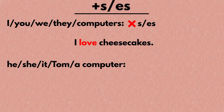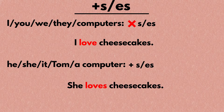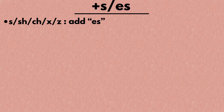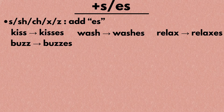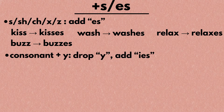On the other hand, if your subject is he, she, it, Tom, or anything singular like 'a computer,' you add an -s after the verb, as in 'she loves cheesecakes.' When adding -s, you need to do it slightly differently depending on the pronunciation of the verb. If the verb ends with s, sh, ch, x, or z, add -es. If the verb ends with a consonant plus y, drop the y and add -ies, as in these words.